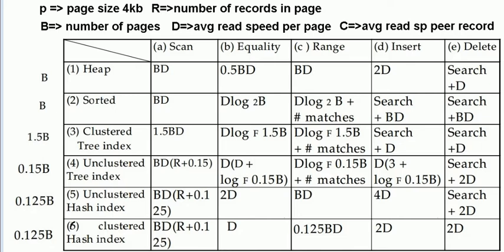We mainly talk about indexing and storage. We have six types of storage that we use in saving and indexing in a database: the heap, the sorted files, the sorted heap, the clustered tree, the unclustered tree, the unclustered hash, and the clustered hash.